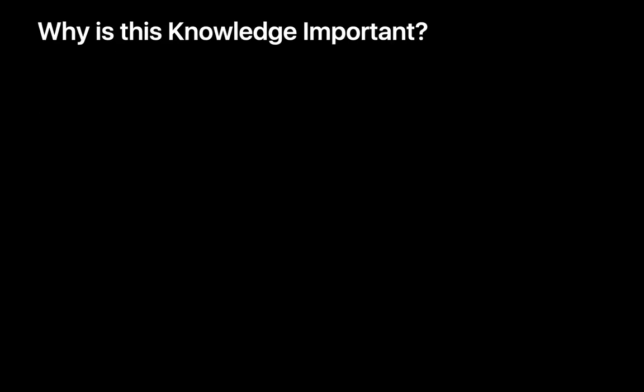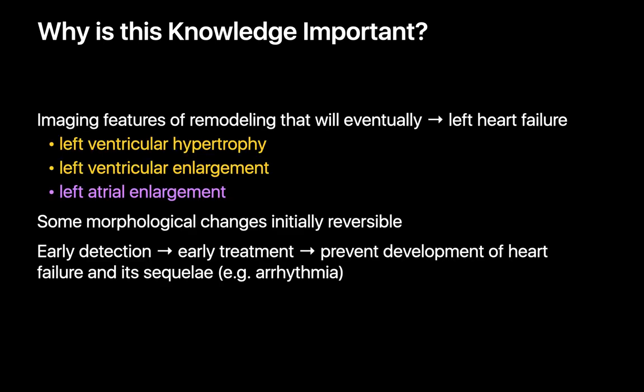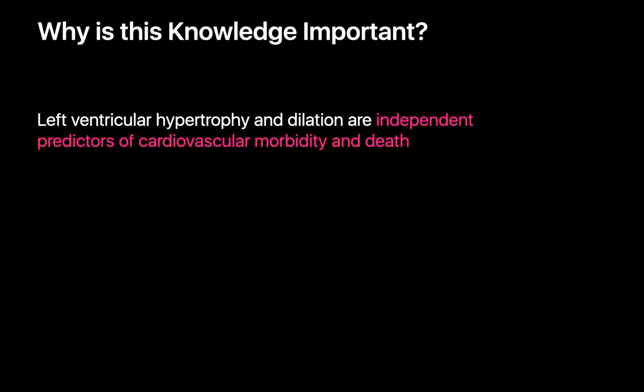At the end of the day, why is all this knowledge important? The morphological changes associated with left ventricular remodeling — left ventricular hypertrophy, left ventricular enlargement, and left atrial enlargement — portend left heart failure. Some of these morphological changes may be initially reversible, meaning early detection could lead to early treatment of the root cause and prevention of left heart failure and its complications. Left ventricular hypertrophy and left ventricular dilation are also independent predictors for cardiovascular morbidity and death, and therefore an important flag for patients and their healthcare providers to recognize.